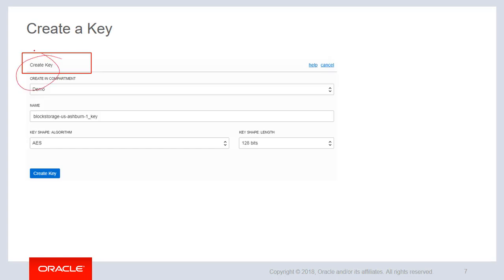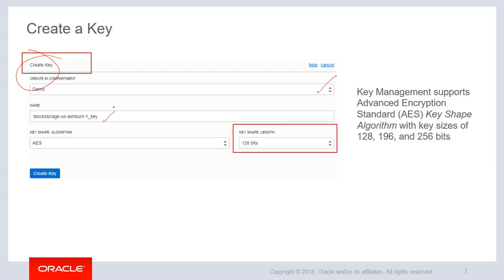So how do you create a key? It's very straightforward. There's a link here you click on that. You create a key. You provide the compartment where you want the keys to reside. You provide a name and then you choose a key shape algorithm. Key management today supports Advanced Encryption Standard AES and the key shapes supported include 128, 192, and 256 bits. So depending on what kind of encryption strength you need, you could choose the size of the key.